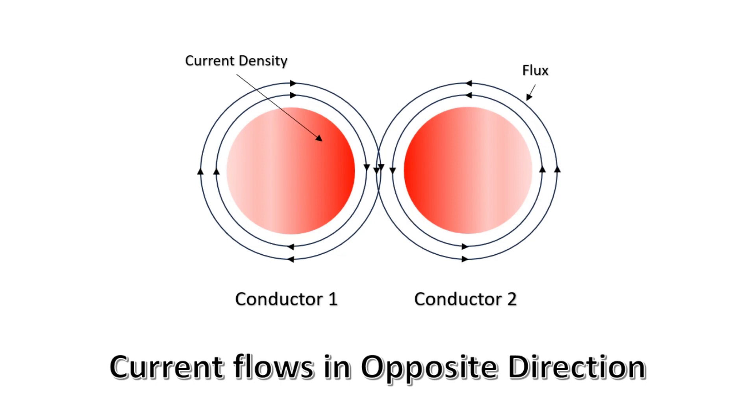The close part of the conductor suddenly starts to carry more current. On the contrary, the magnetic fields of the far-off half begin to cancel each other out. This cancellation is similar to the previous scenario but results in a completely different outcome. The close part carries more current while the magnetic fields of the far-off half cancel each other out.